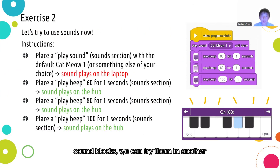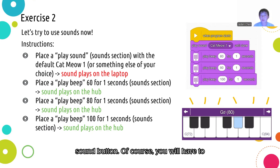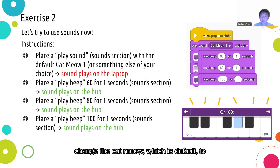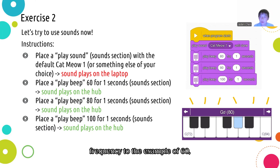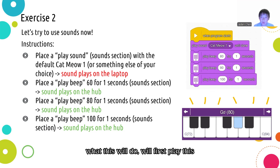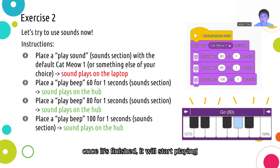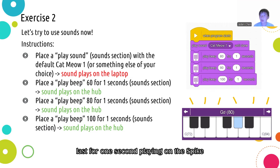Now that we've learned about the sound blocks, let's try them in another exercise. First, place a play sound block under a when program starts block found in the events section. You can change the default cat meow to another sound of your choice, or leave it as the cat meow — this will play on your laptop, so make sure your sound is up. After that, place three beep blocks and set the frequencies to 60, 80, and then 100, with each one played for one second. What this will do is first play the cat meow on your laptop, and once it's done, it will start playing an ascending beep sequence on the Spike Prime hub, one after the other, each lasting one second. Once you've tried it, feel free to change some of the frequencies or sounds to see what happens.